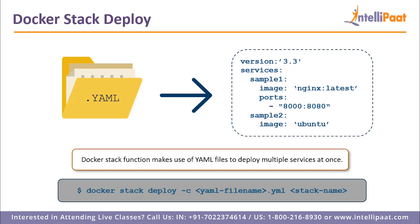Inside this YAML file we will mention all the configurations. The format is 3.3 and in the services we mention two services: sample_one as service one and sample_two as service two. Inside sample_one we have mentioned the image as nginx latest with port 8000:8080, and in sample_two the image mentioned is ubuntu. To deploy both of these services we would use the command `docker stack deploy` to create a stack. A stack is basically a set of different services — it forms another layer which helps us to deploy our application including all the different services. A stack comes above services in the hierarchy.